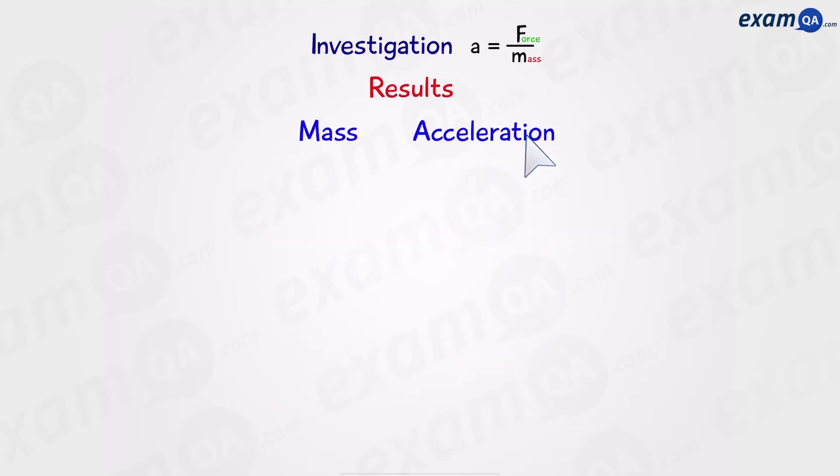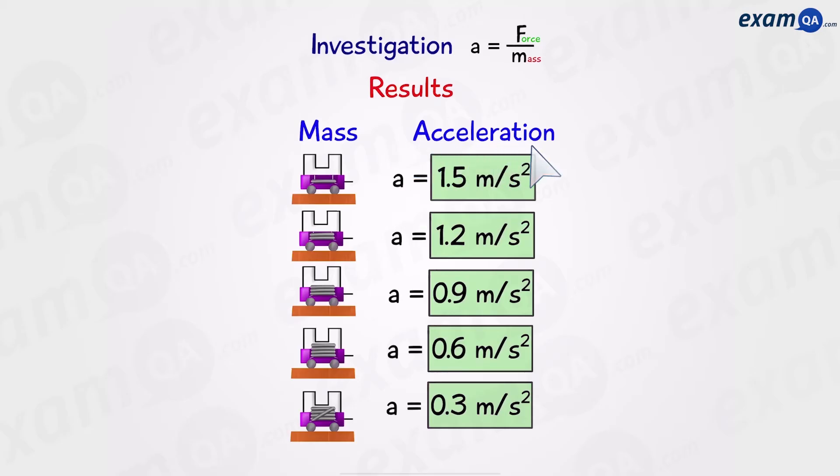So if we plot our results, we're going to see mass and acceleration. Notice that as the mass increases on the trolley, in other words the mass of the whole system increases, the acceleration decreases. And this matches our initial hypothesis that if you increase mass, you're going to decrease acceleration.